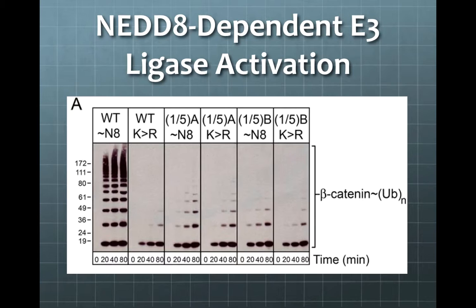As there are many different Cullin and RBX subunits that can combine to form an E3 complex, many combinations are possible. The only structure that was able to be crystallized successfully was Cul5-RBX1, so they test this one as the wild type in this experiment. They also test two Cul1-Cul5 hybrids, labeled hybrids A and B. In this experiment, beta-catenin ubiquitylation was measured for the complex in the presence and absence of NEDD8. Clearly for the wild type, the presence of NEDD8 results in greatly increased ubiquitylation, as you can see in the farthest left column as compared to the one right next to it.